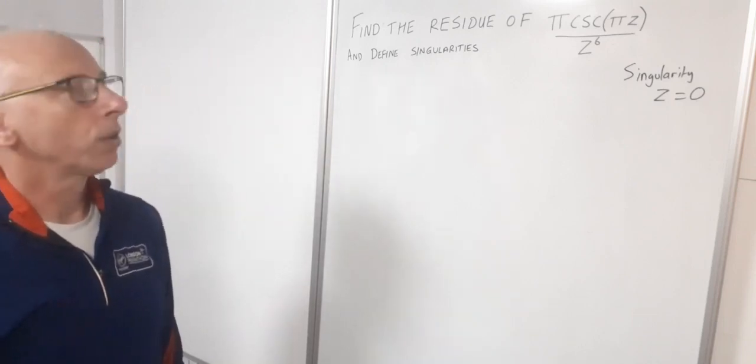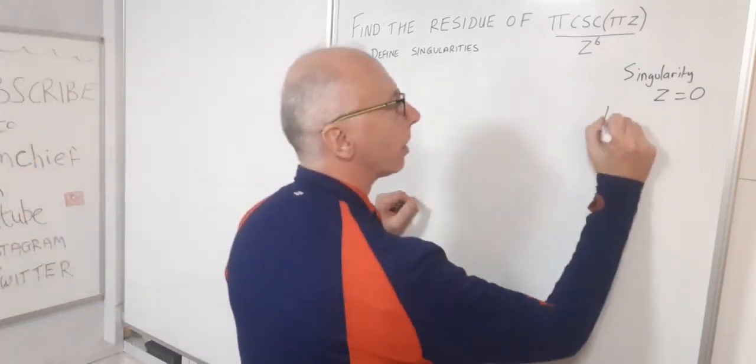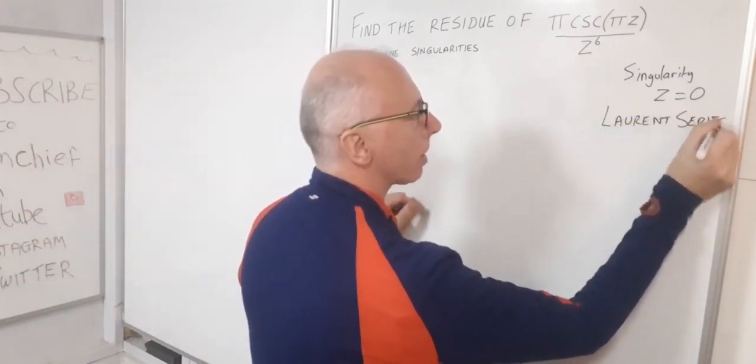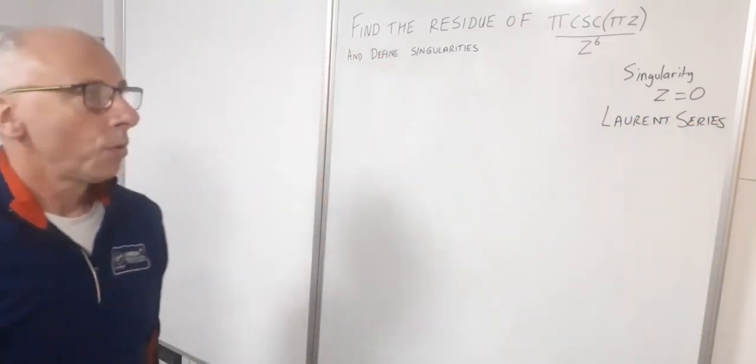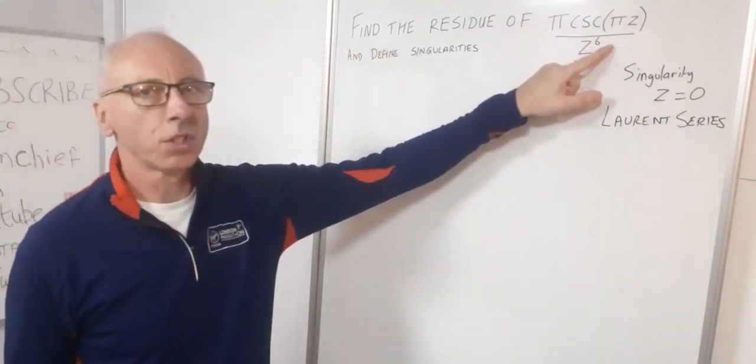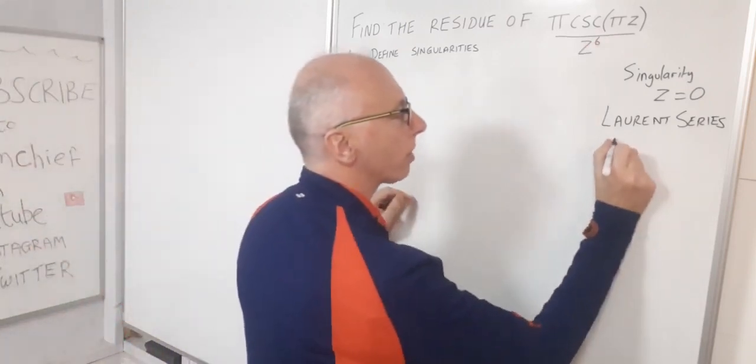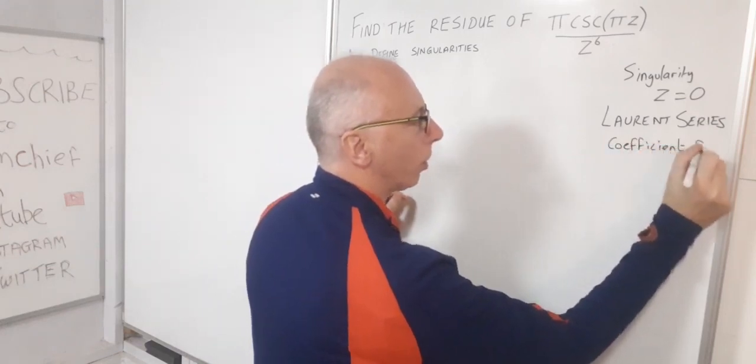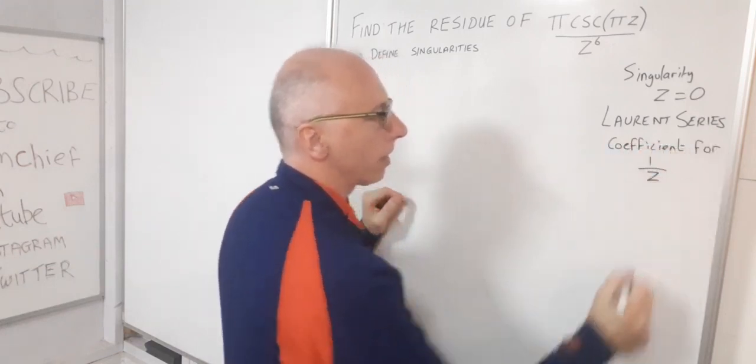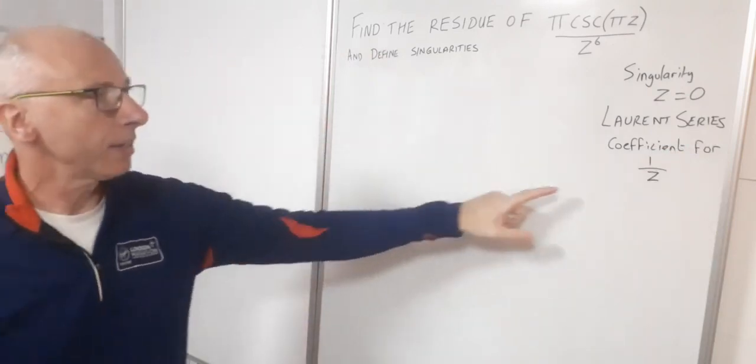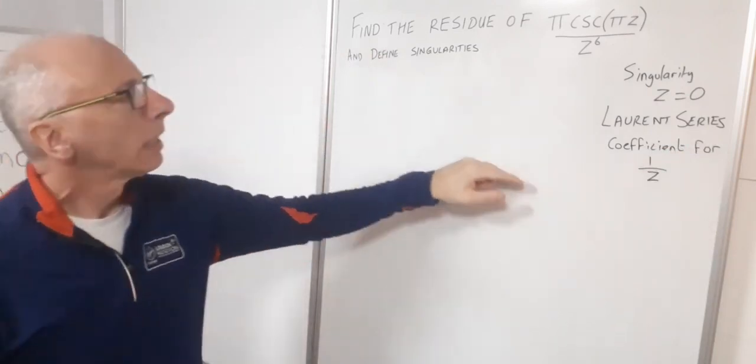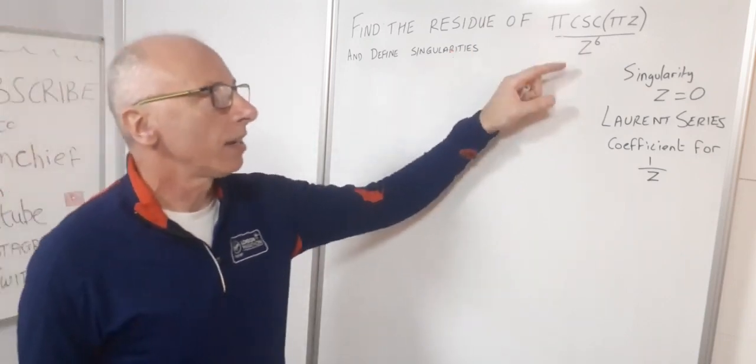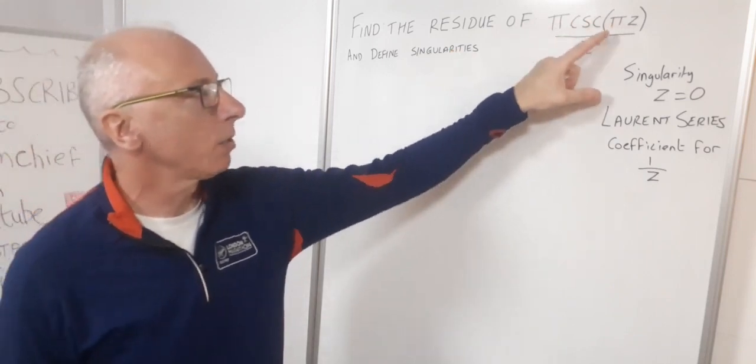So what we can use is something called the Laurent series. And what this means is we can find a Laurent series for this function and then what we're looking for is the coefficient for the 1 over z term. That's the term that we're going to be interested in. So how are we going to go about finding the Laurent series for that function? I don't know of any Taylor series or Laurent series for π cosecant(π) over z.